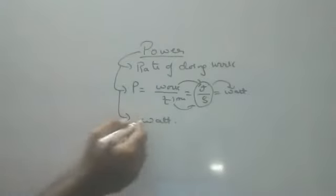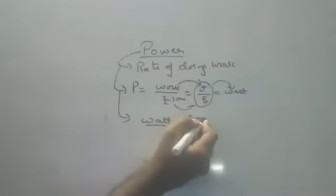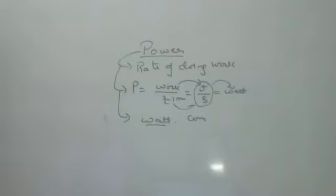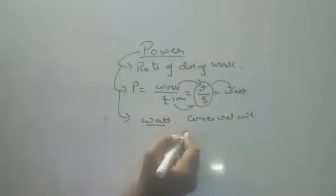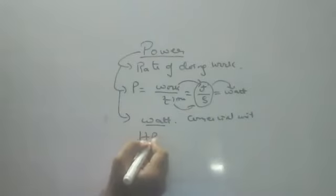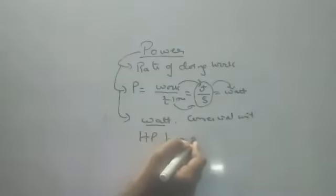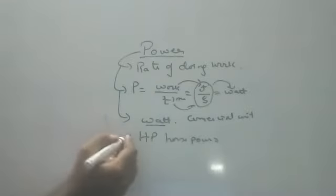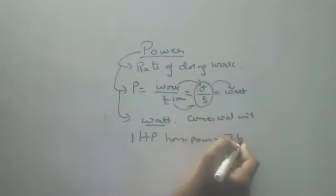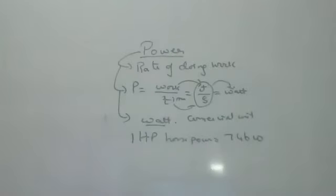That is the standard unit. There is also a commercial unit of power. The commercial unit of power is horsepower, abbreviated as HP. When you buy machines or motors, the power rating is written in HP. One horsepower is equal to 746 watts.